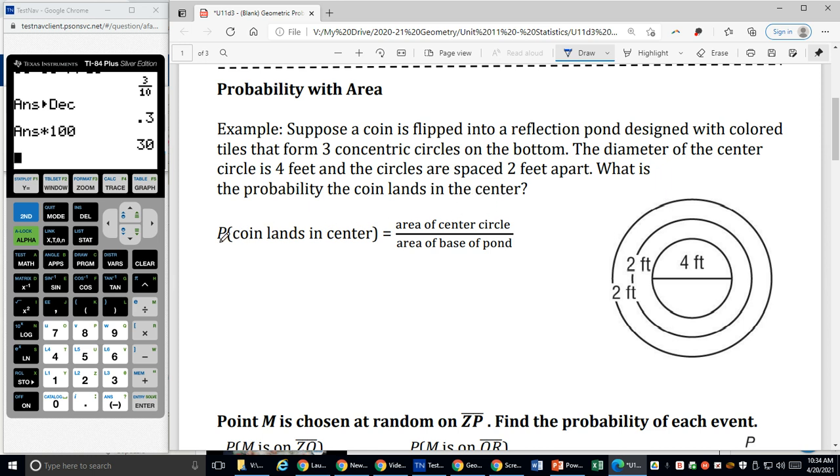So the probability that the coin lands in my center circle, the favorable is landing in that center circle. So we need to find the area of that center circle and where else can it land? It can land anywhere in the pond, right? So the total outcomes is going to be the area of the whole pond. So I need to find these two areas.